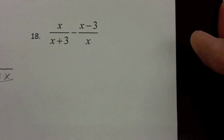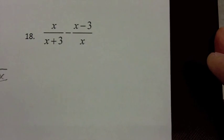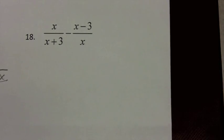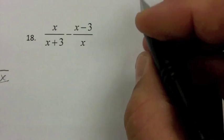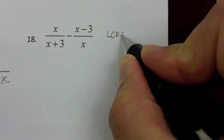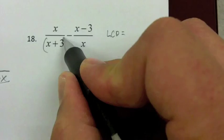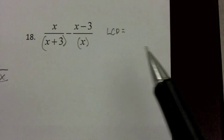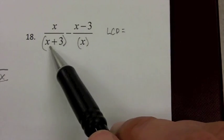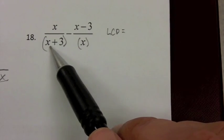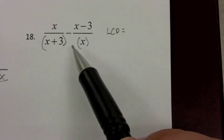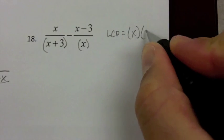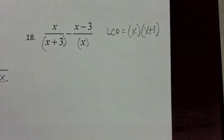Let's take a look at question 18. I'm asked to subtract, and to subtract I have to have a common denominator, so I'll find the LCD. My LCD needs to represent each factor type: x plus 3 is one factor type, and x is another. These are different factors — x plus 3 is not the same as x — so I need both in my LCD. That gives me x times x plus 3 as my LCD.